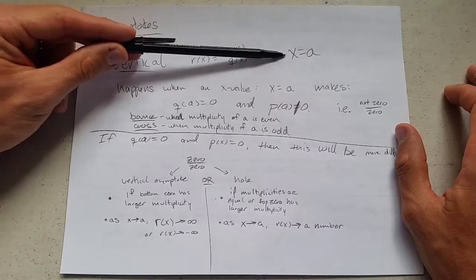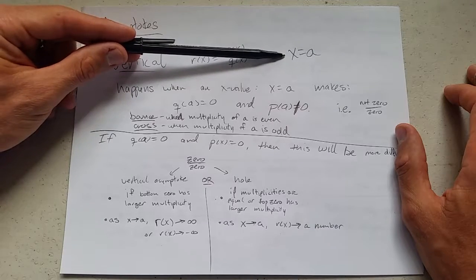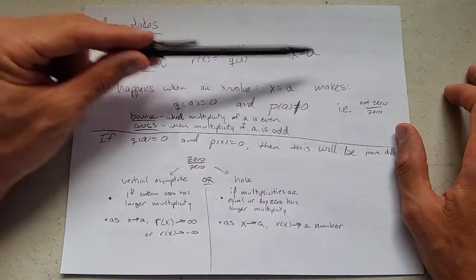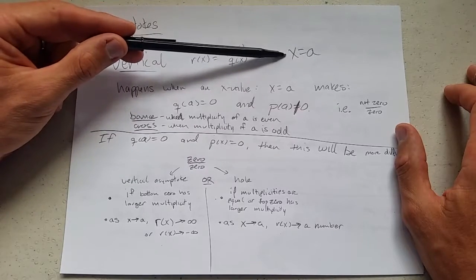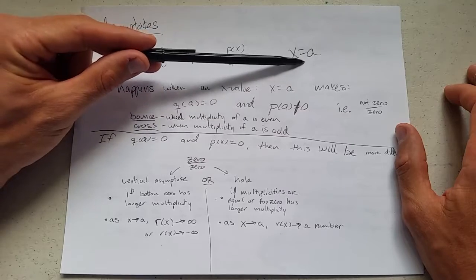Vertical asymptotes are going to look like x equals a. If you remember from lines, if x equals a number, this is going to be a vertical line. So the vertical line will have the x value always a.